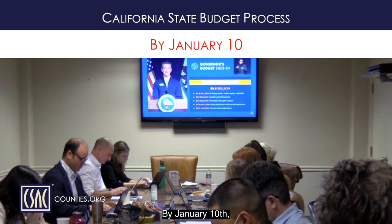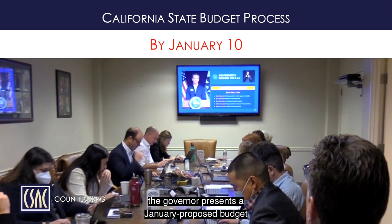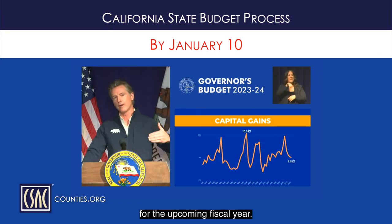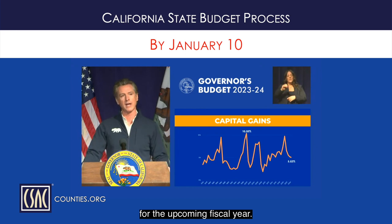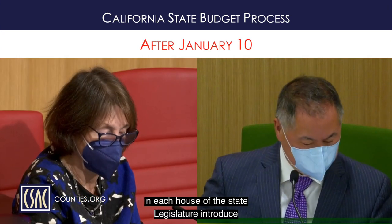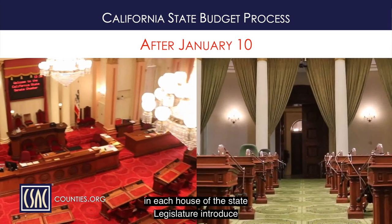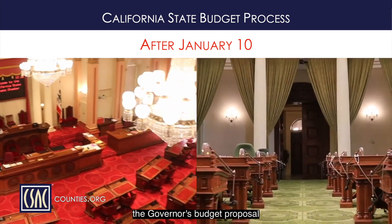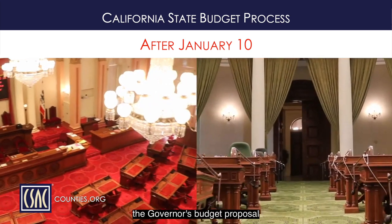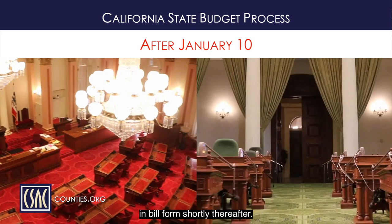By January 10th, the Governor presents a January proposed budget for the upcoming fiscal year. The Budget Committee Chairs in each House of the State Legislature introduce the Governor's budget proposal in bill form shortly thereafter.